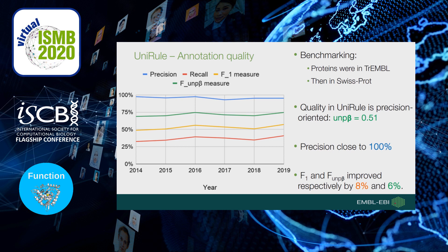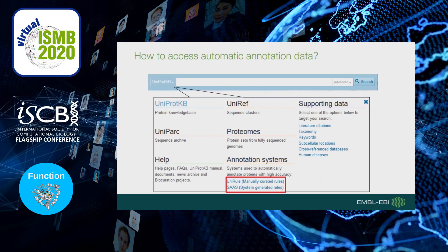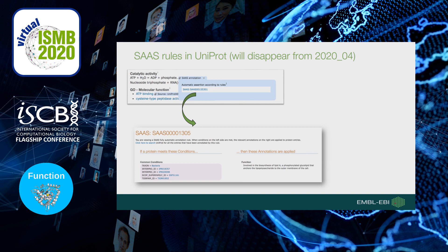The F1 score and the UniProt F-score measures also improved by 8% and 6% respectively. On the UniProt website, you can access all rules used to annotate UniProtKB records. You can find the links to the rules — highlighted here by the red rectangle — by clicking on the option button next to the search bar. You can also find information added by annotation rules clearly highlighted using evidence tags, which can also be used as search terms to filter annotations added by a rule.